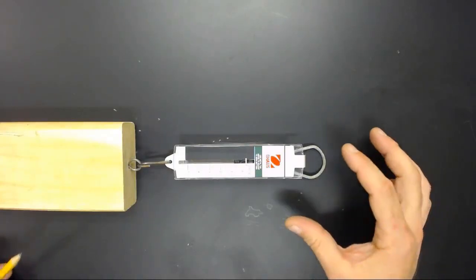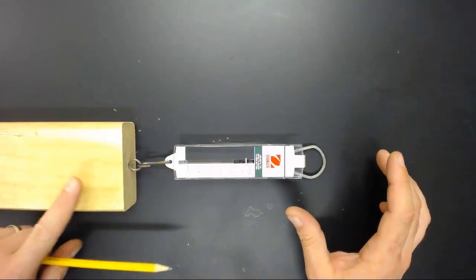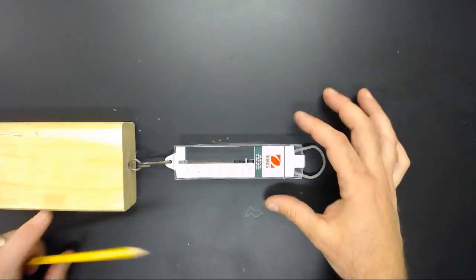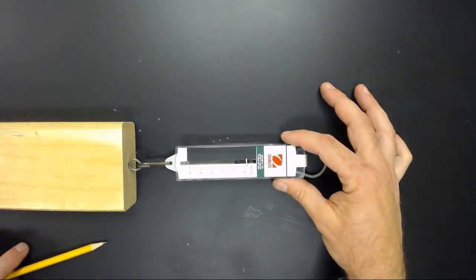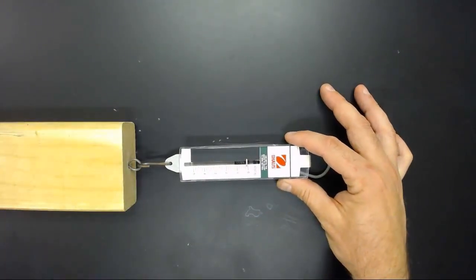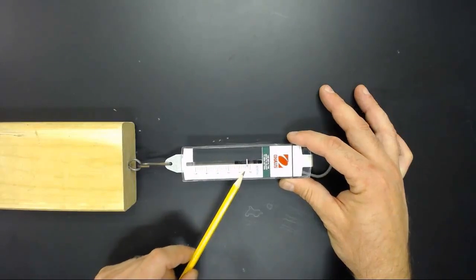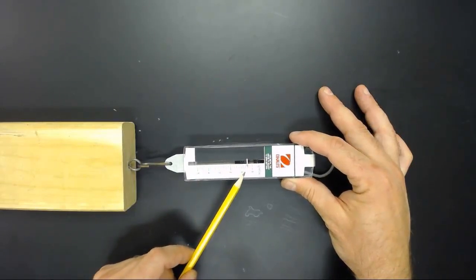In order to measure static friction, we have a block not moving, and we are very slowly going to pull on our spring scale, all the while watching how much force is being applied.